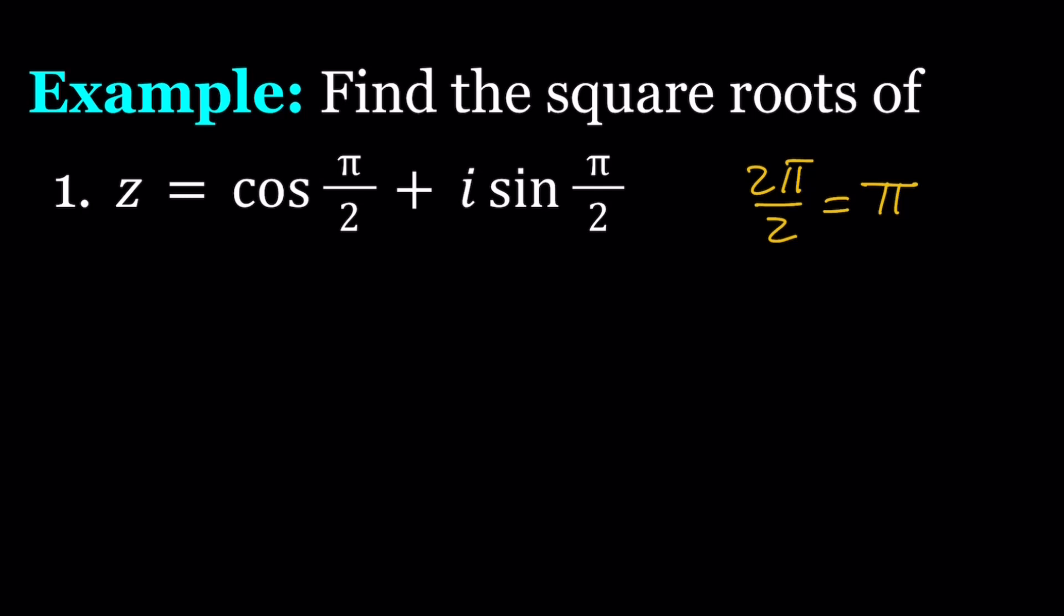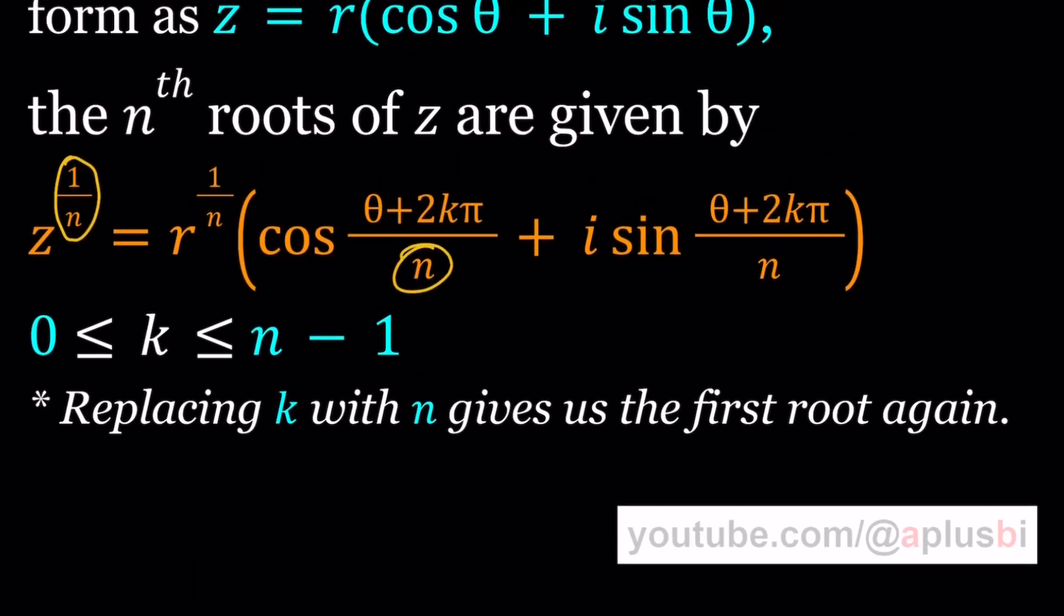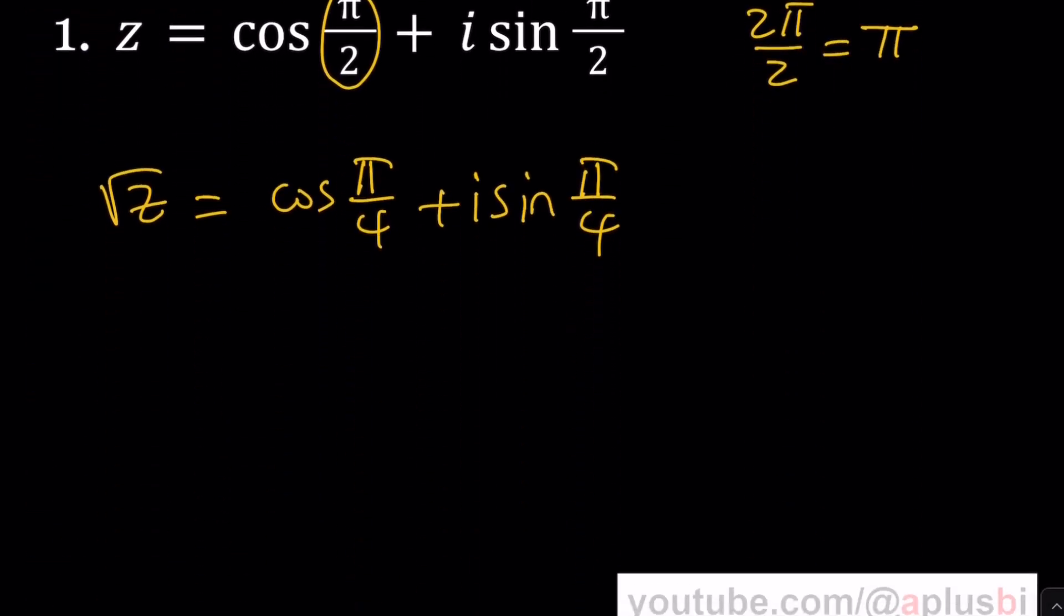First of all, let's find the first square root of z. And you can call that anything, like w0, w1, whatever you want to use. Now, to find the first square root, I'm going to do the following. r is 1, so I don't have to worry about it. I'm going to cut this angle in half. That's going to be cosine pi over 4 plus i sine pi over 4. Now, why am I taking half of that? Because you're supposed to divide by n, which is 2 in this case. So that's the first square root of z. And like I said earlier, we could call this w0, and let's call this w1. So basically, you're going to go from w0 to wn minus 1. That's going to be n roots.